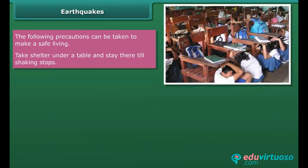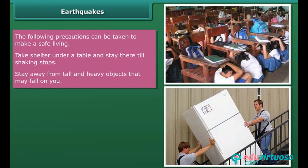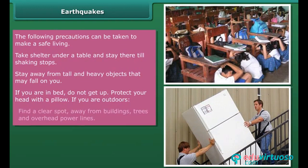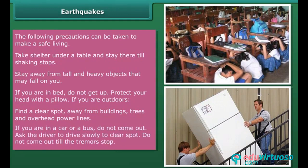The following precautions can be taken for safe living during an earthquake. If you are at home, take shelter under a table and stay there till the shaking stops. Stay away from tall and heavy objects that may fall on you. If you are in bed, do not get up — protect your head with a pillow. If you are outdoors, find a clear spot away from buildings, trees, and overhead power lines. If you are in a car or bus, do not come out — ask the driver to drive slowly to a clear spot and do not come out till the tremors stop.